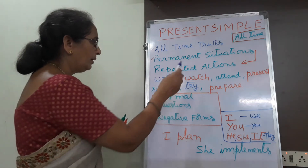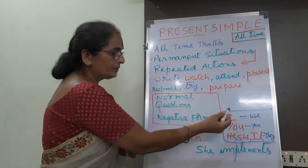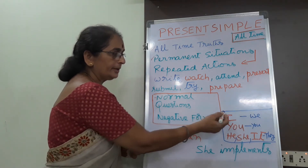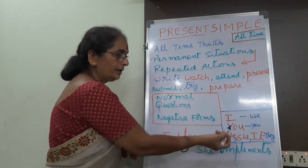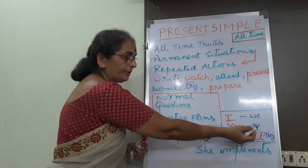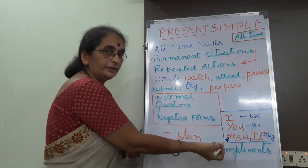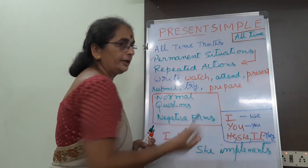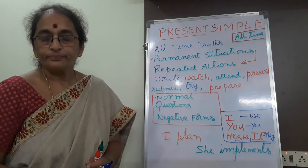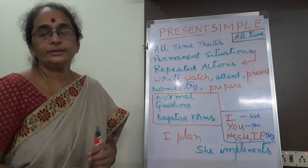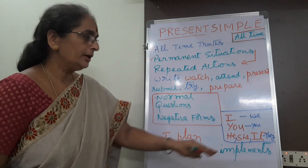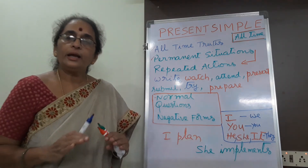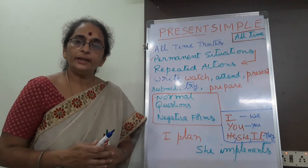Coming to another part, I would like to introduce the first person singular number I, plural number we. Second person singular number you, plural number you. And third person singular number he, she, it, plural number they. You are applying all these numbers to the verbs. In third person singular number, you add S to the verb in present simple tense.